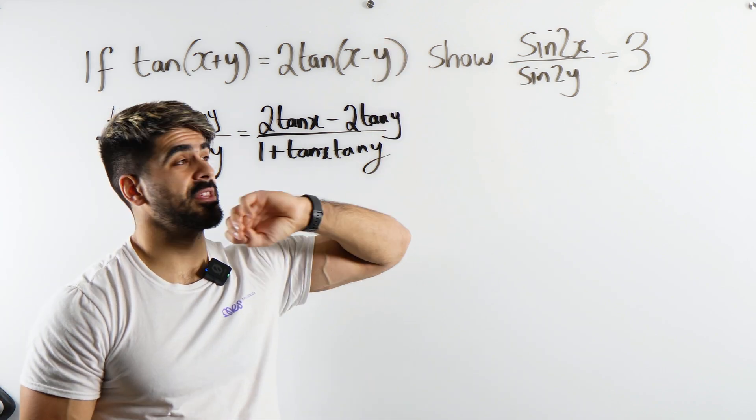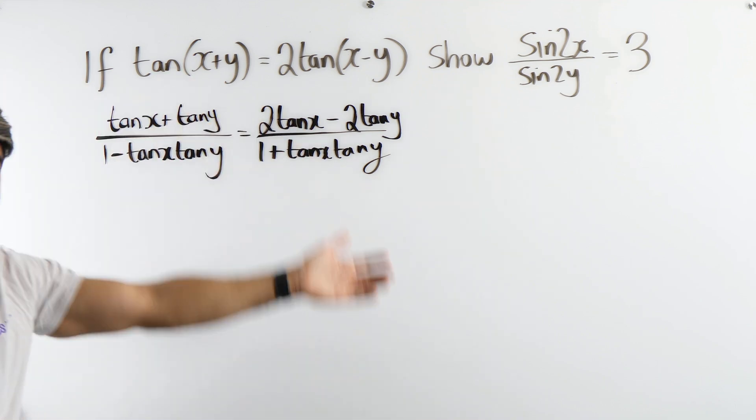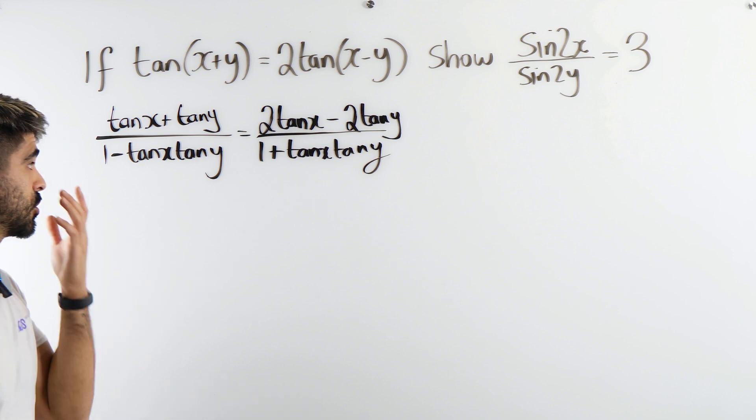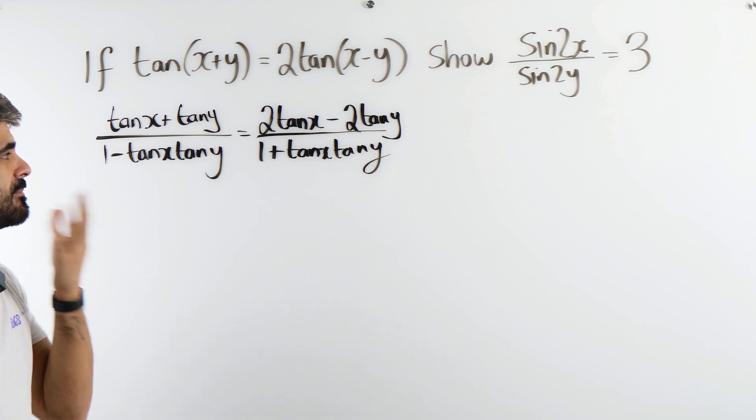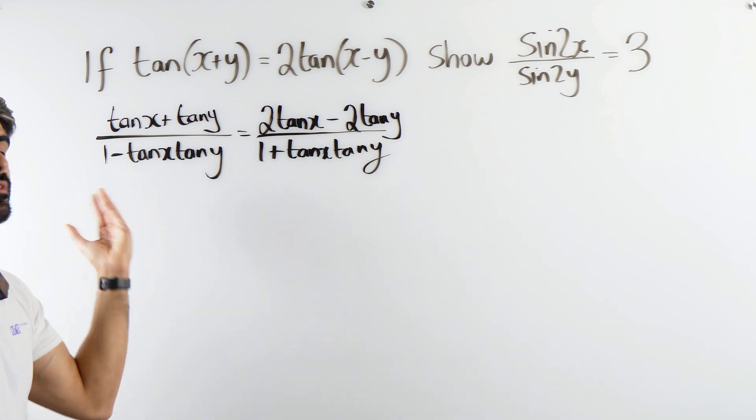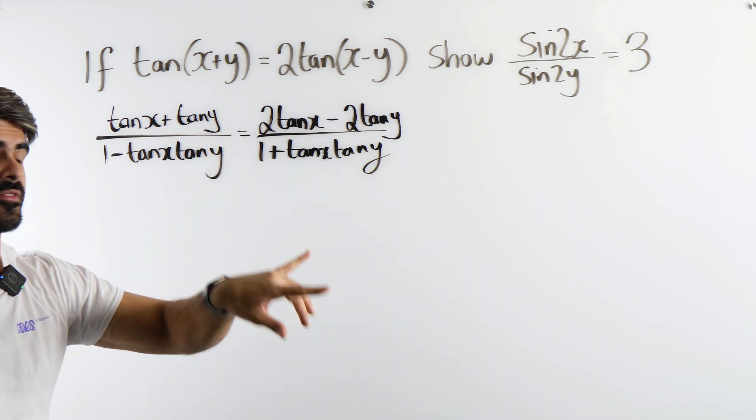I mean we're going to have to turn everything in terms of sine and cos. Whether we do it now or later, it doesn't really matter. My first instinct I think is just get rid of the denominators here first and then we'll do the conversion.